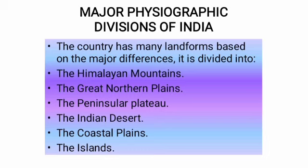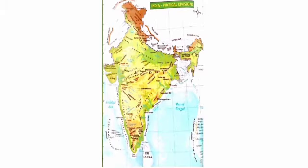The five physiographic divisions are: the Himalayan Mountains, the Great Northern Plain, the Peninsular Plateau, the Indian Desert, the Coastal Plains, and the Islands.